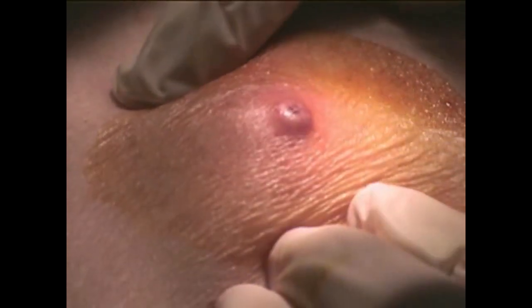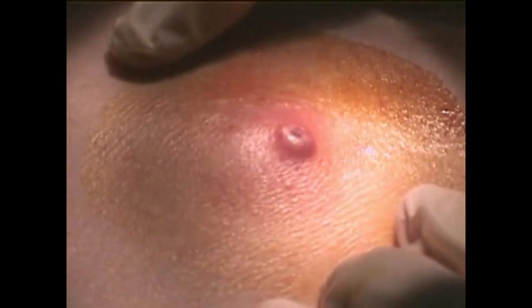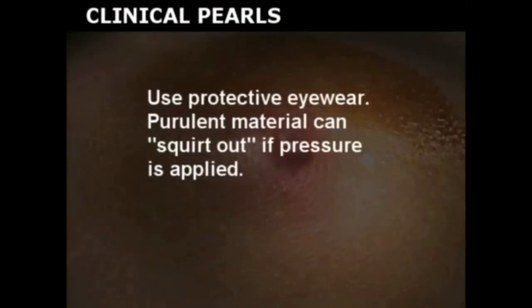Prep the abscess area with povidone-iodine or alcohol. Carefully palpate the abscess to accurately determine the size and location. Use protective eyewear, as purulent material can squirt out if pressure is applied.